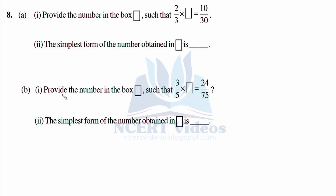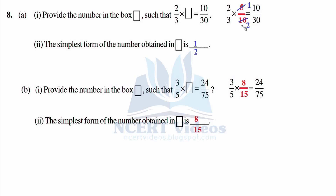For 2/3 times box equals 10/3: what should be multiplied by 2 to get 10? It should be 5 — 2 times 5 is 10, and 3 times 10 is 30. So the box is 5 over 10. But 5/10 is not in simplest form — cancellation gives 1 over 2. Therefore the simplest form is 1 over 2.